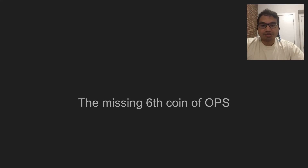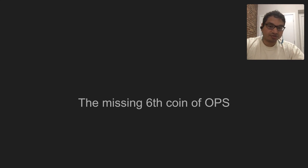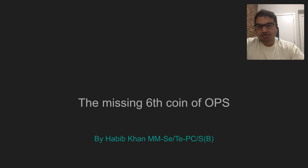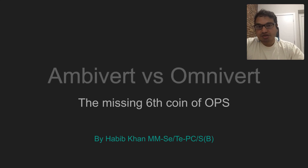The missing sixth coin of Objective Personality — we're going to take a look at the non-genetic coins and then see what the missing sixth coin is. The sixth coin is the ambivert versus omnivert coin.